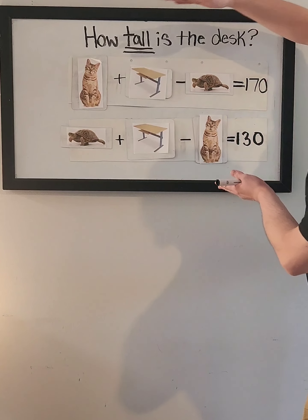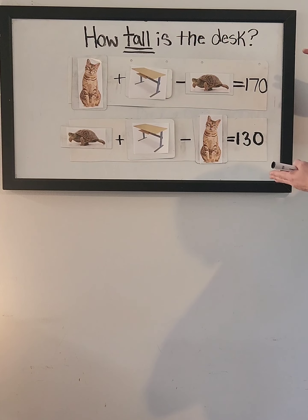If you look at this as two equations, you can eliminate both the cat and the turtle by adding these two together.